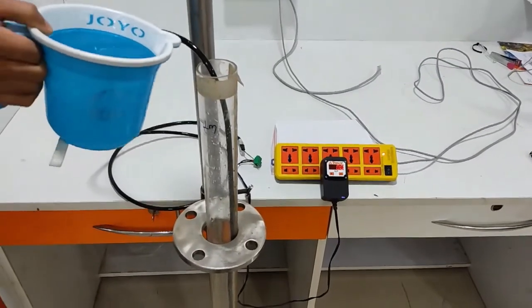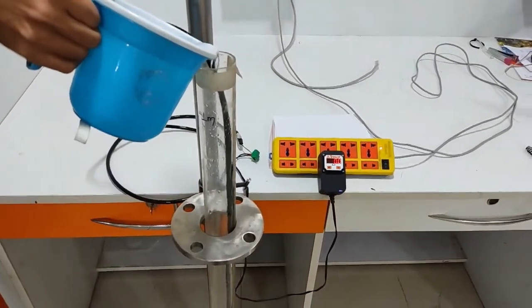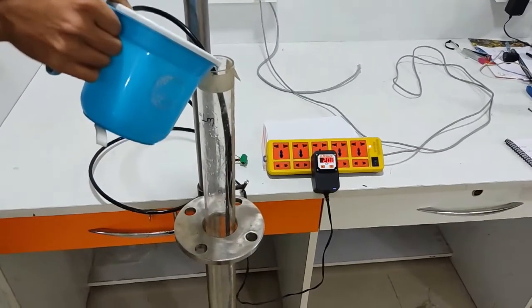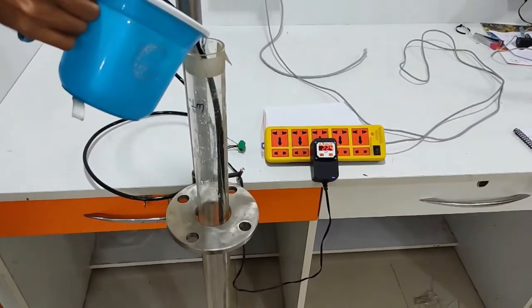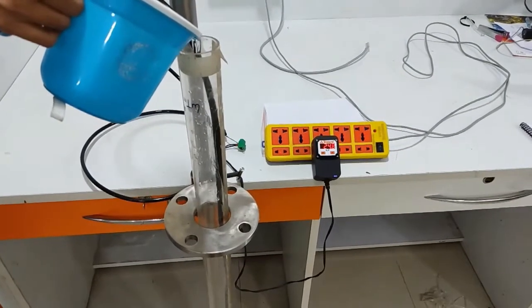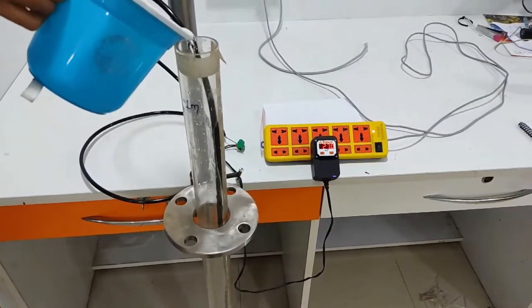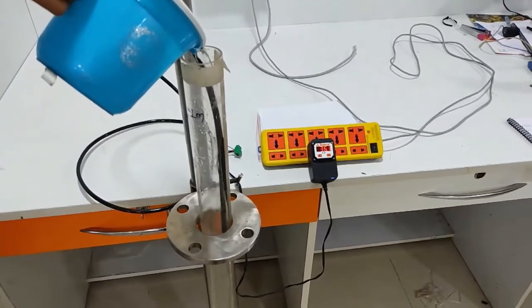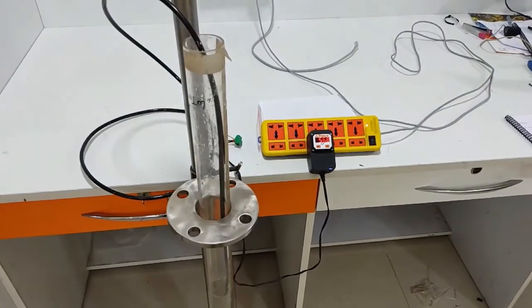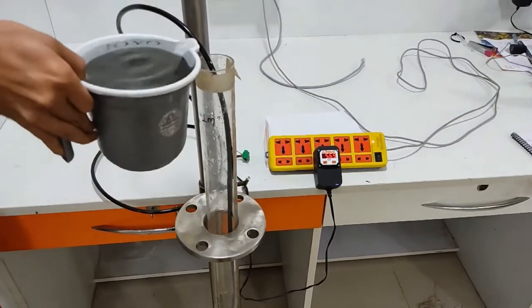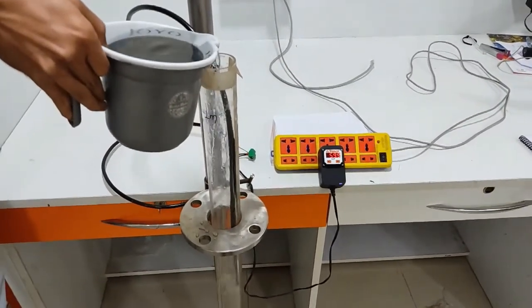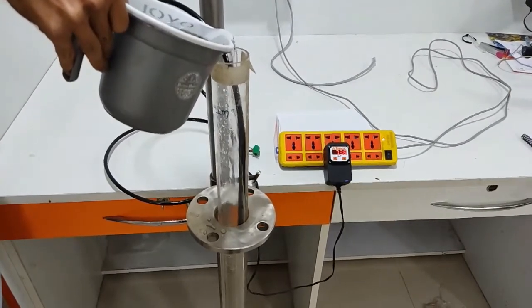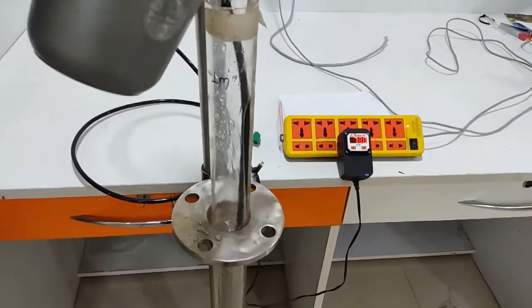Now we start filling the flask with water. As you see, as the water level increases, the value in the display also changes from 0 to 100%. We are going to fill it till the 1 meter mark.